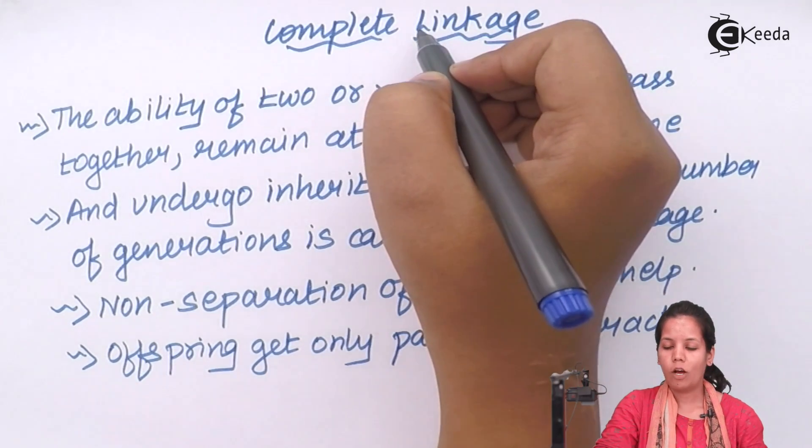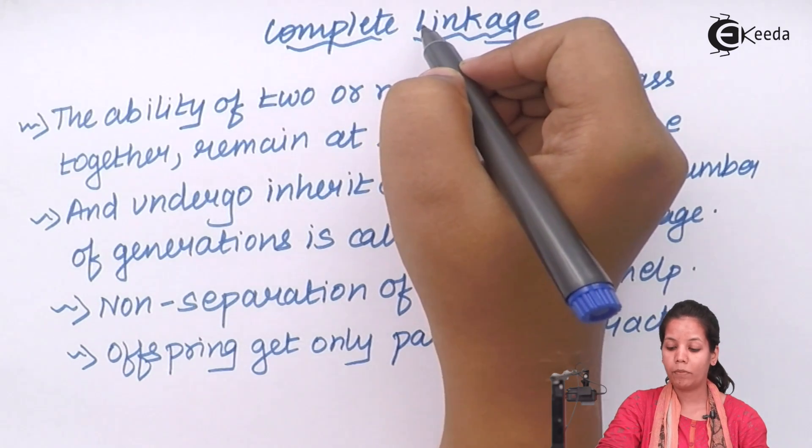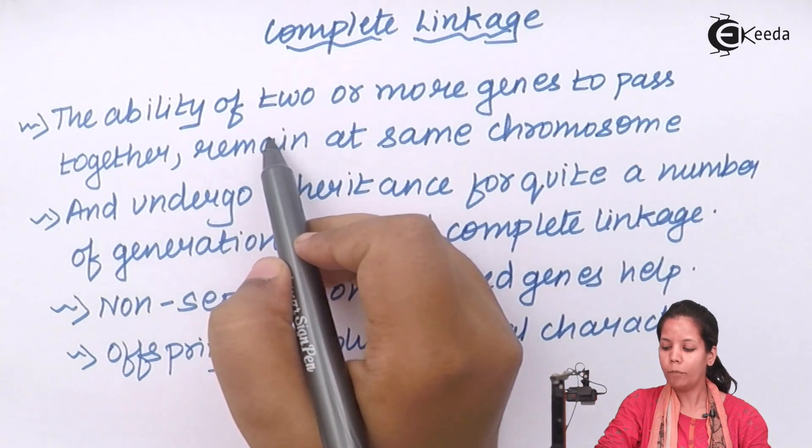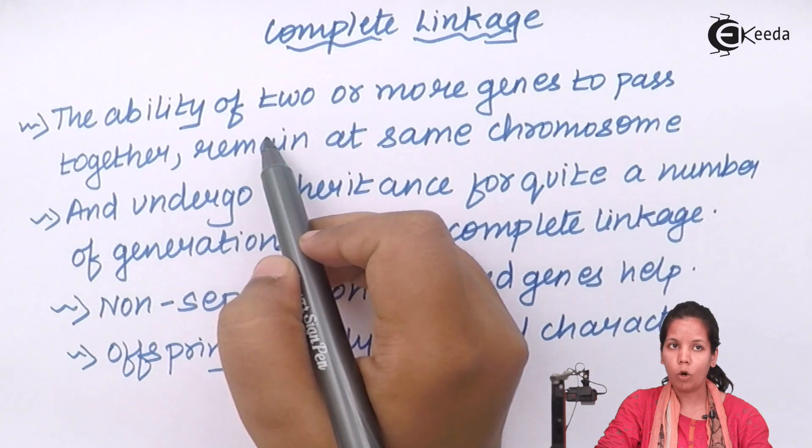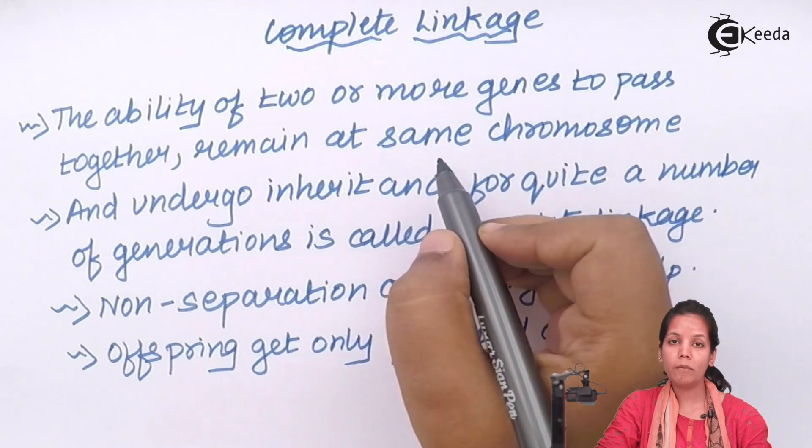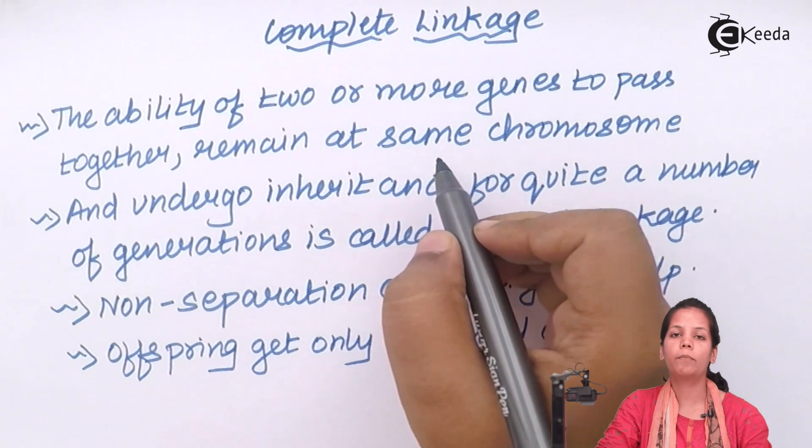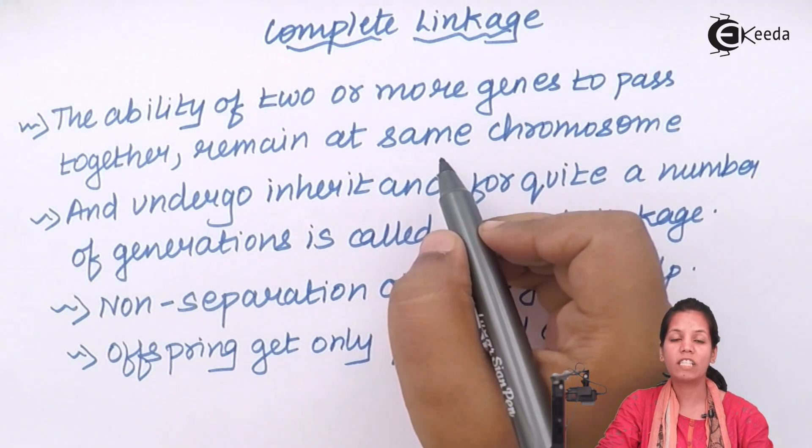Complete linkage. Now complete linkage is also a type of linkage which is very common. It is the ability of two or more genes to pass together or to transfer together or to inherit together and whenever they transfer together they try and remain together in the same position at a chromosome which is same.